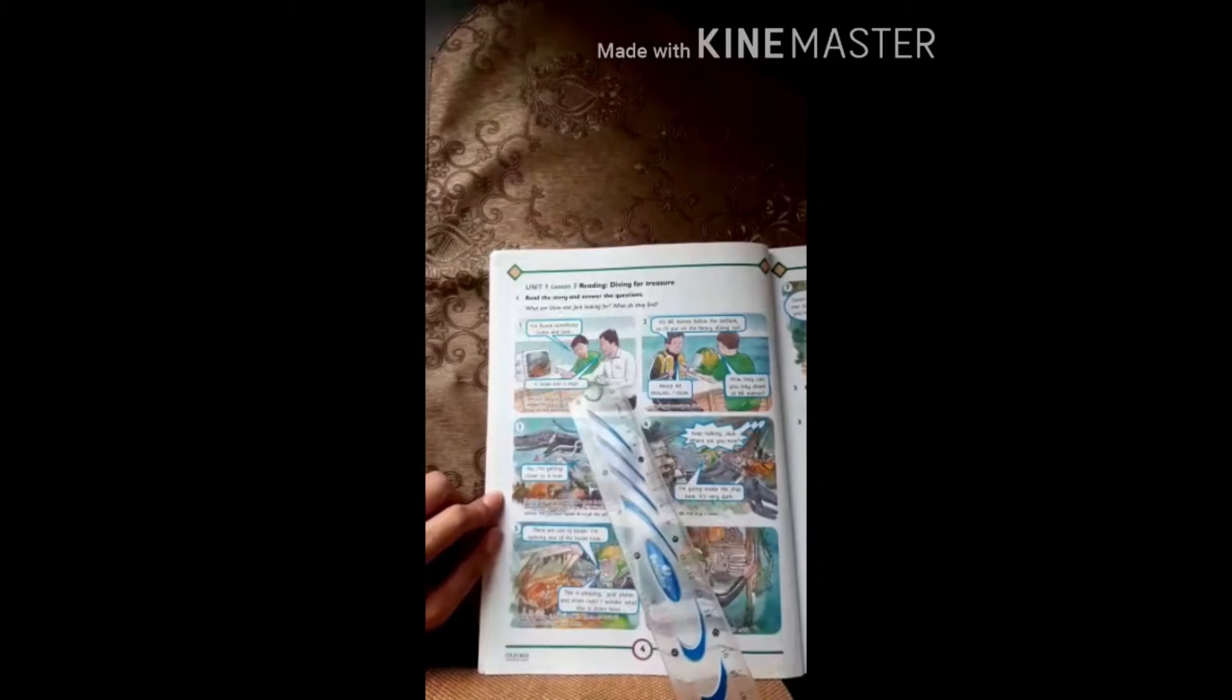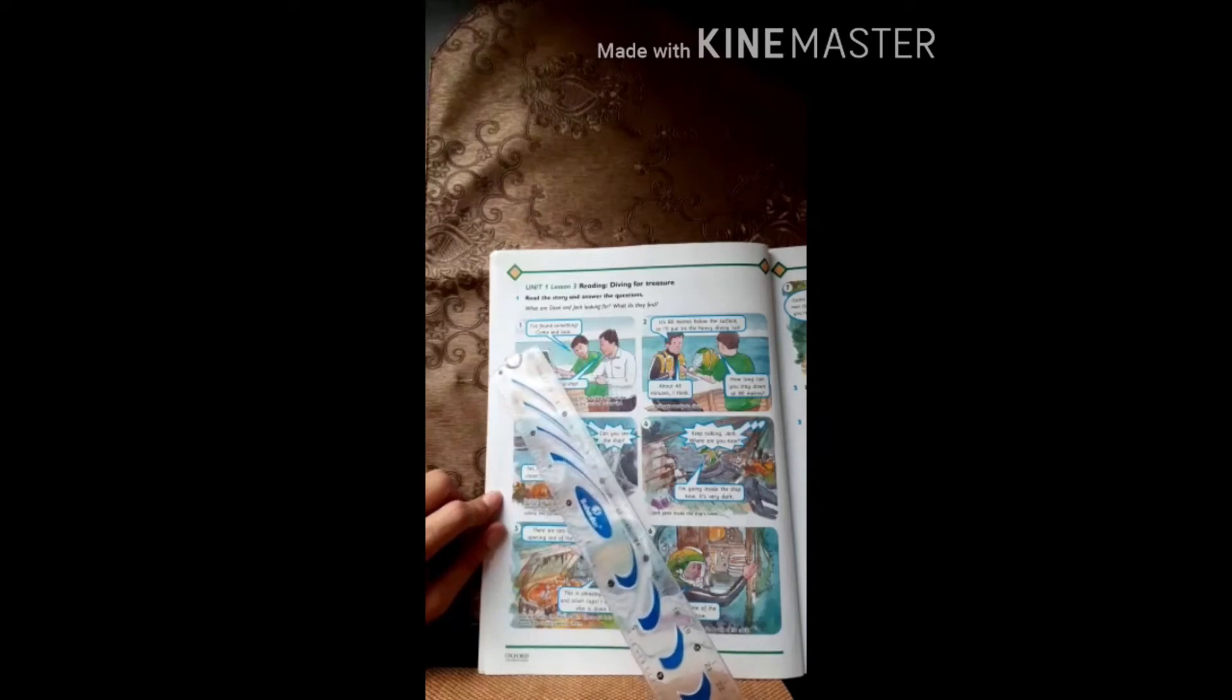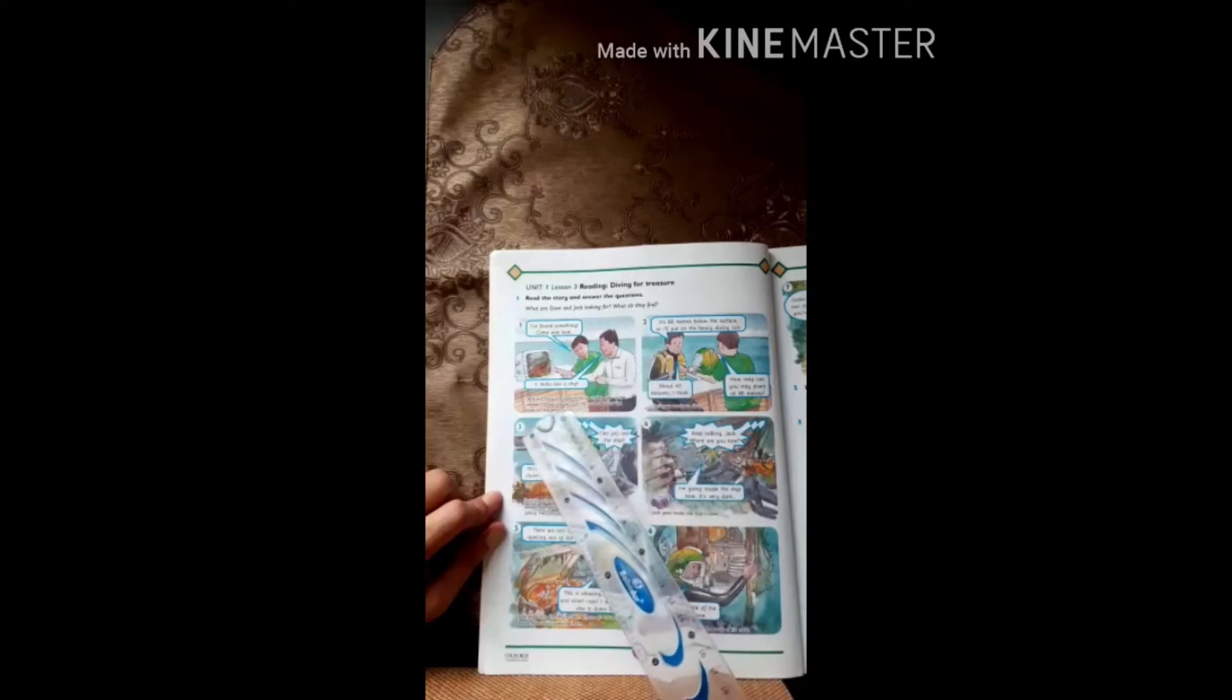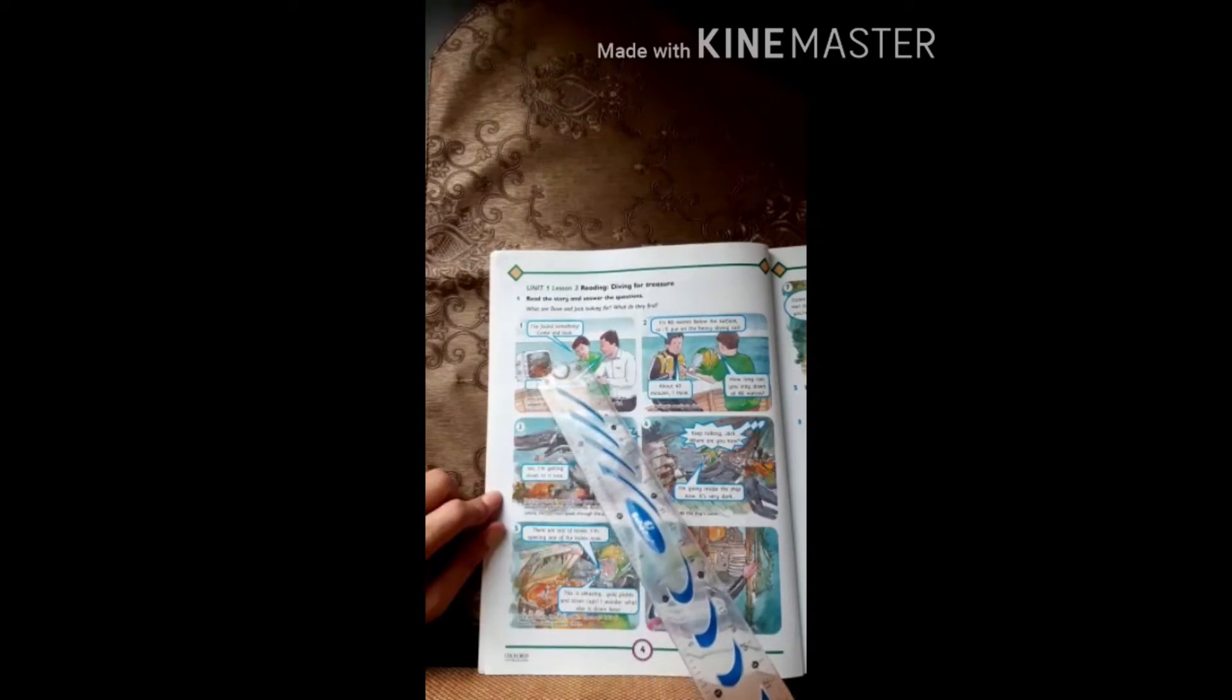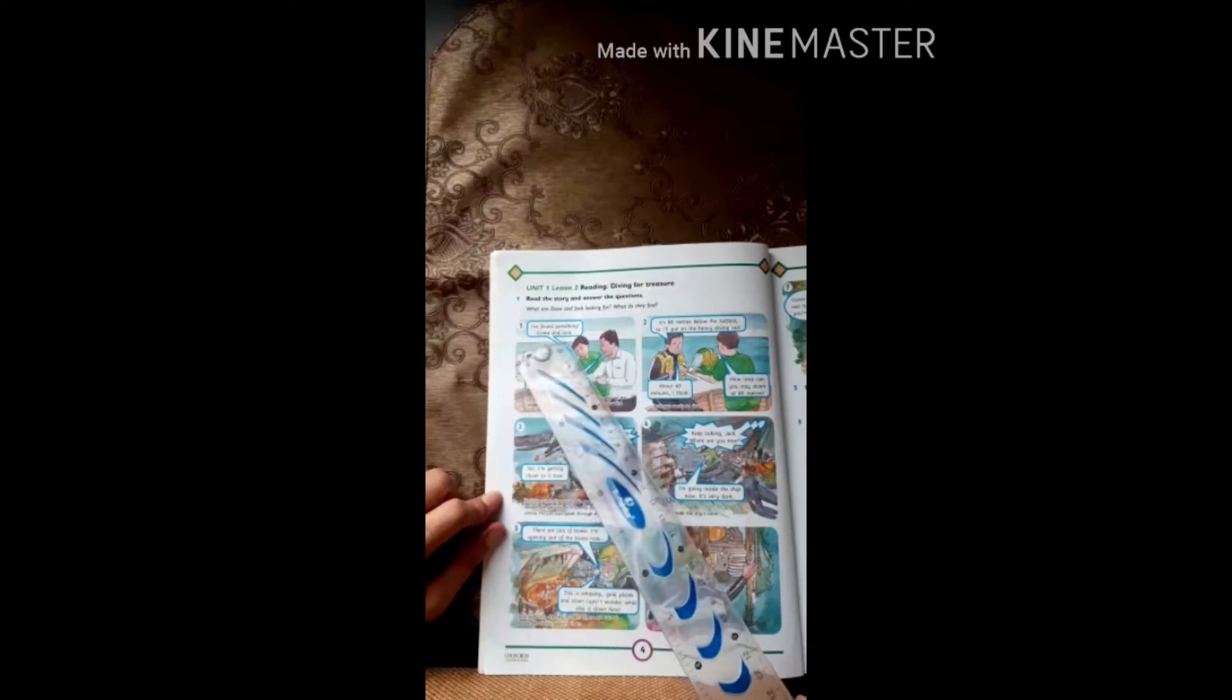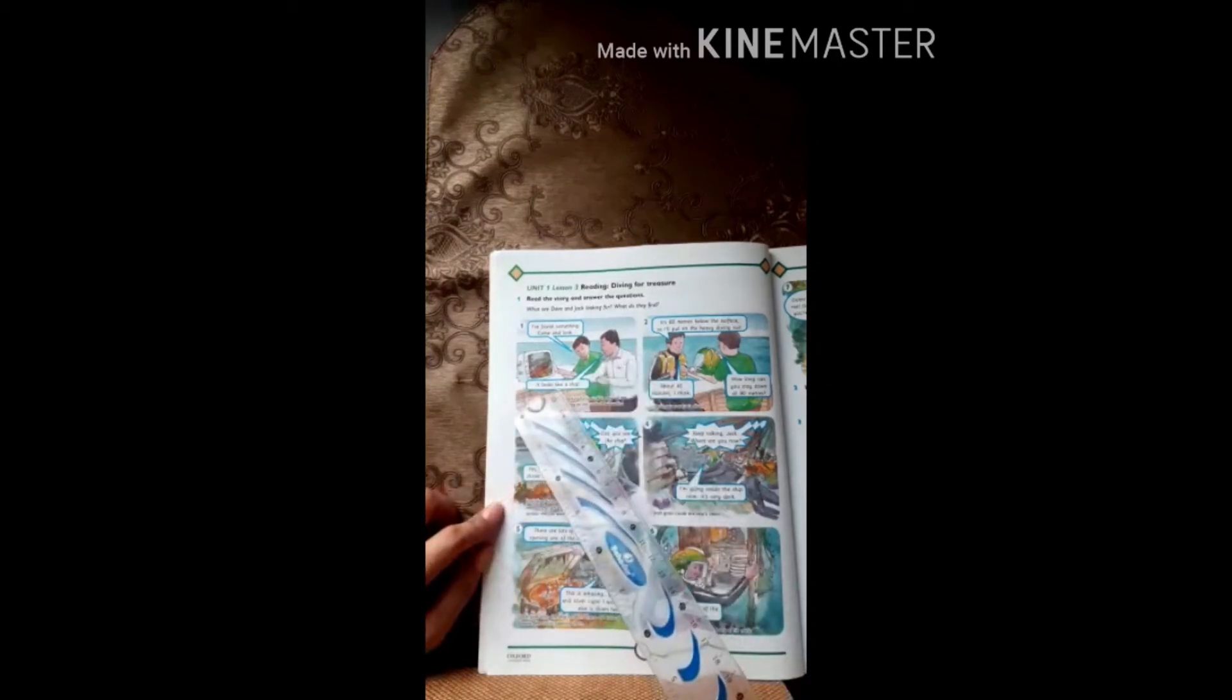Now look at the picture carefully. There are two characters in the picture, one is Dave and the other one is Jack. Look at the first: I have found something, come and look Jack. They are looking for a sunken ship on the sea bed. Dave is looking at the sea bed below the boat on the echo screen. This is Dave in green shirt. He said I found something, come and look.